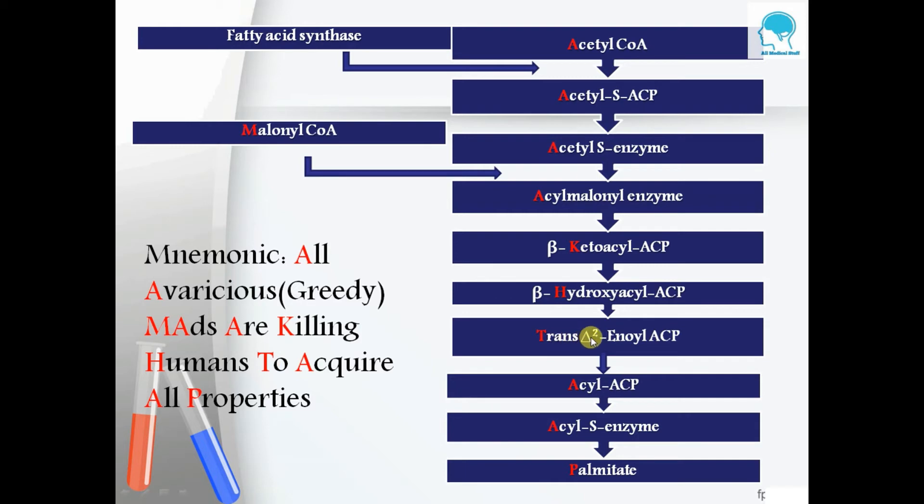T stands for trans-Δ²-enoyl-ACP, A stands for acyl-ACP, another A stands for acyl-S-enzyme, and P stands for palmitate.